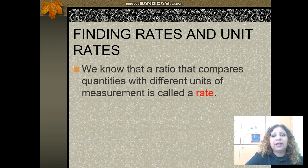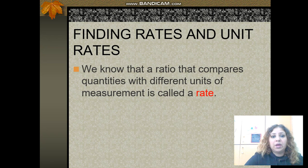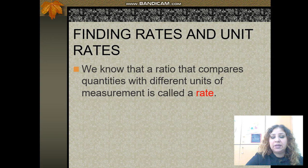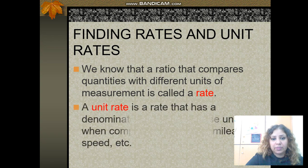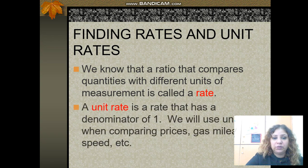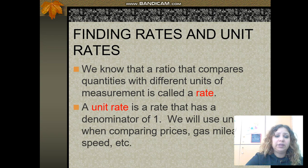Now, how do you find rates and unit rates? A ratio that compares quantities with different units of measurement is called a rate. When you are comparing two different units, that means it's a rate. The unit rate always has a denominator of one.